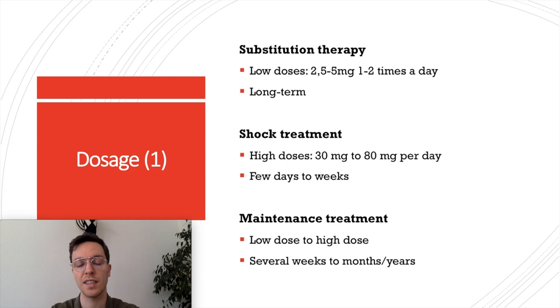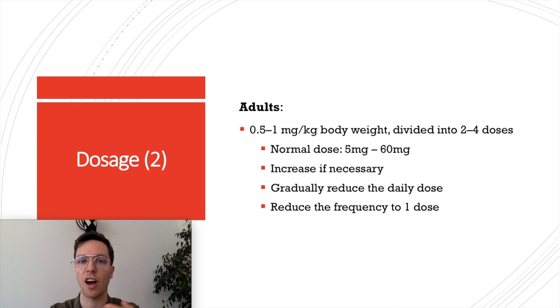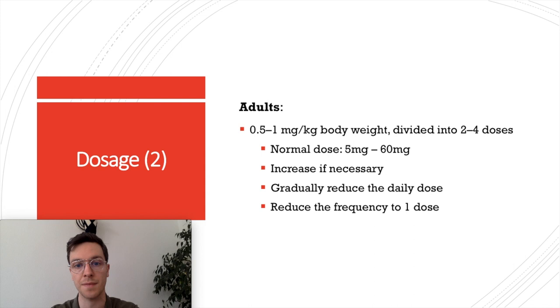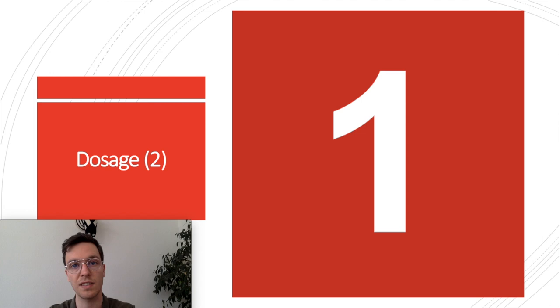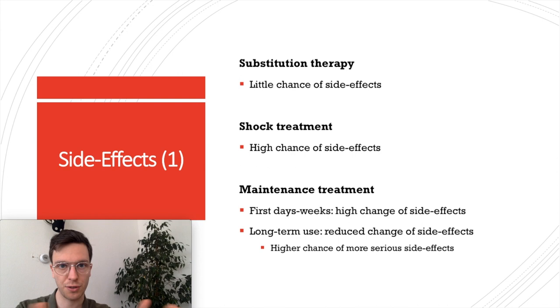For maintenance treatment — for example in rheumatoid arthritis or severe COPD — give a low to high dose for several weeks to months or even years. For a broad indication, a normal starting dose is 0.5 to 1 mg per kilogram body weight divided over two to four doses per day, ranging from 5 mg to 60 mg. If you don't achieve the desired effect, increase the dose; once you do, gradually reduce the dose and preferably reduce the frequency to once daily.